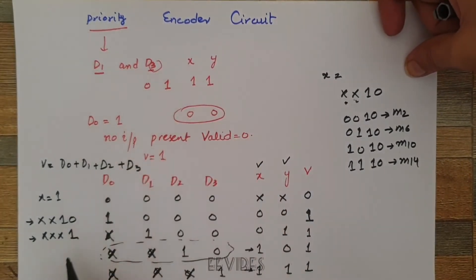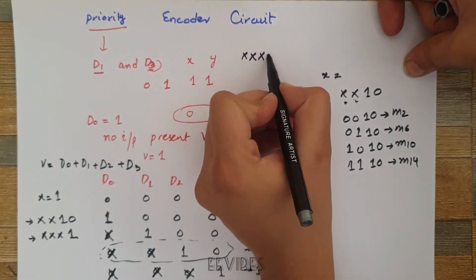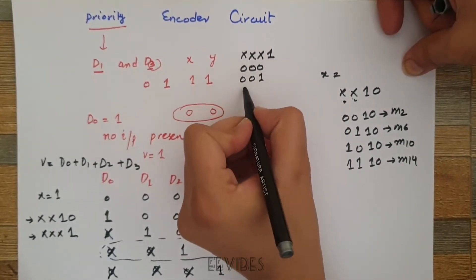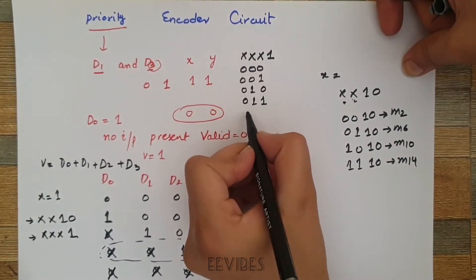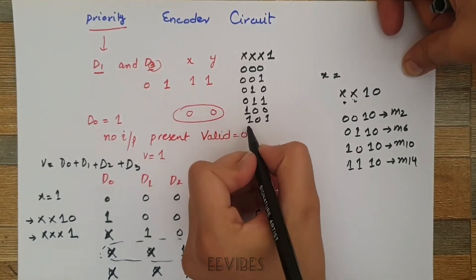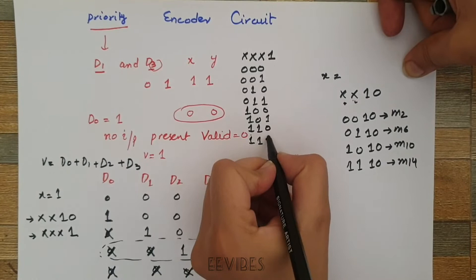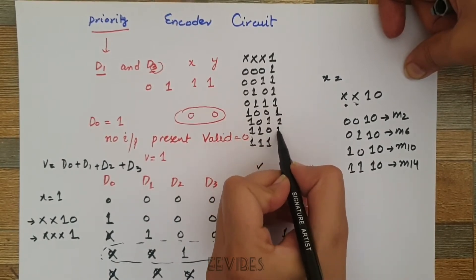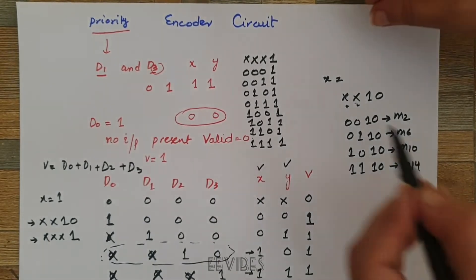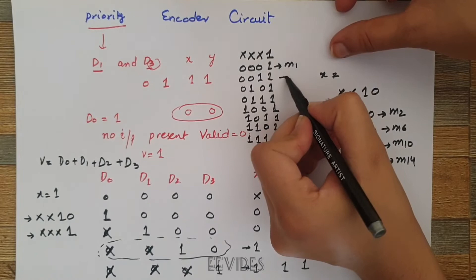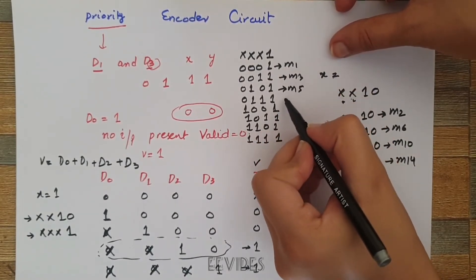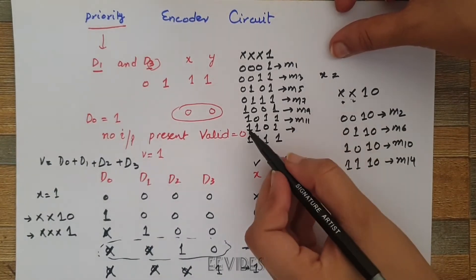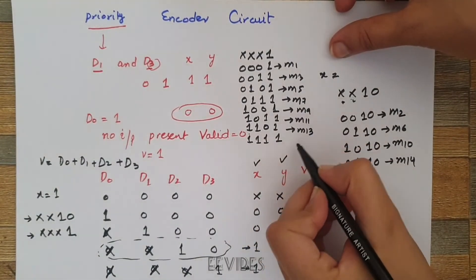Similarly, x equals 1 for the combination (don't care, don't care, don't care, 1) — that is, D3=1 while D0, D1, D2 are all don't cares. Varying those three bits through all eight combinations gives minterms m1, m3, m5, m7, m9, m11, m13, and m15.